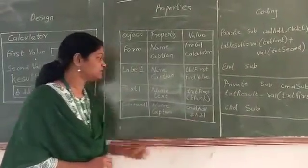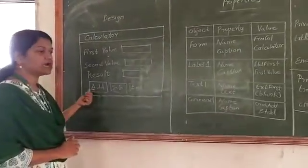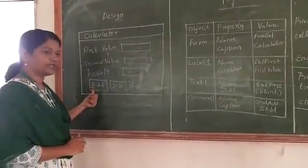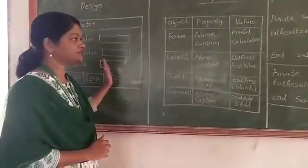Now why this ampersand? Because if you will see over here, just below A there is one underline. So how we are going to get the underline? Because of this ampersand. So here we have completed two parts: